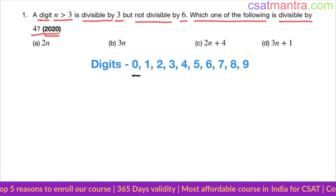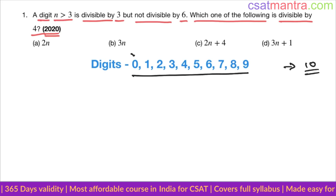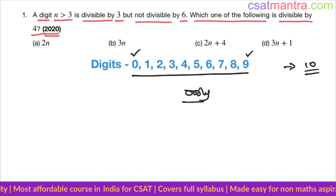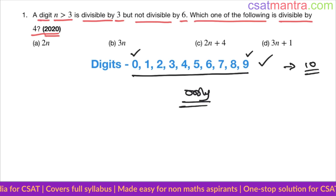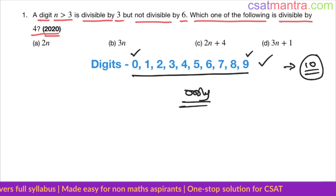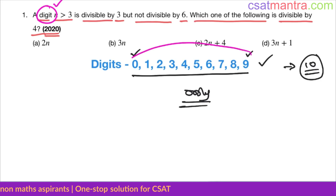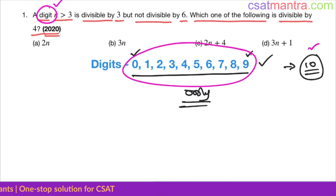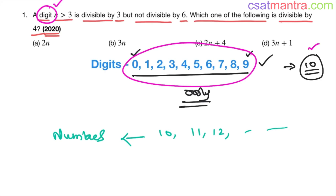These are the digits we have in mathematics. How many of them are there? Ten — 0 to 9. These are the only digits. Every other number you form in mathematics is made up of these digits. So when a questioner mentions 'digit,' that means you are referring to 0 to 9, these 10 digits, nothing else. What about 10, 11, 12? You can call them numbers, but not digits. 10 is a two-digit number — it is not a digit.